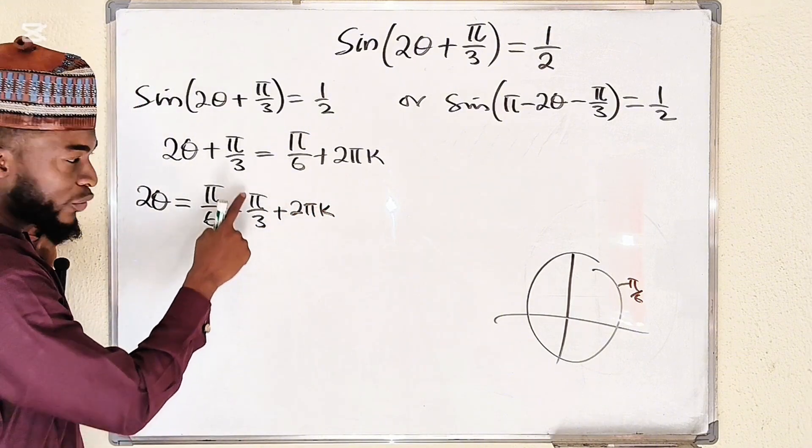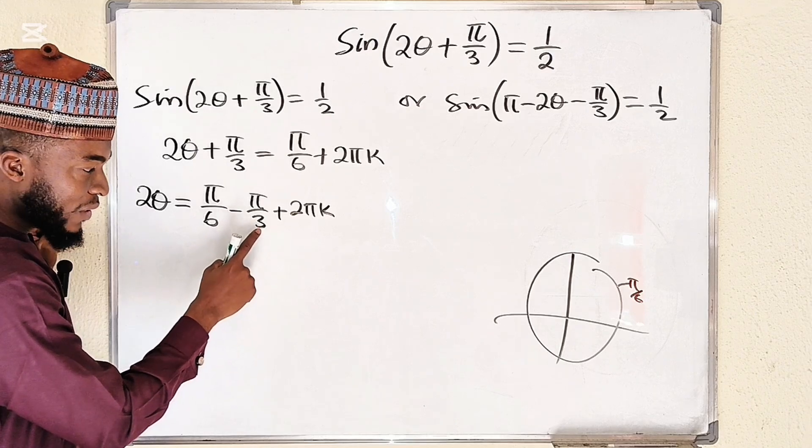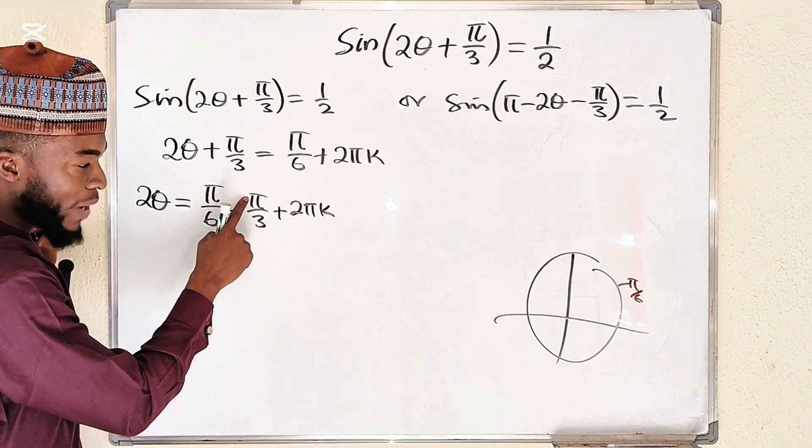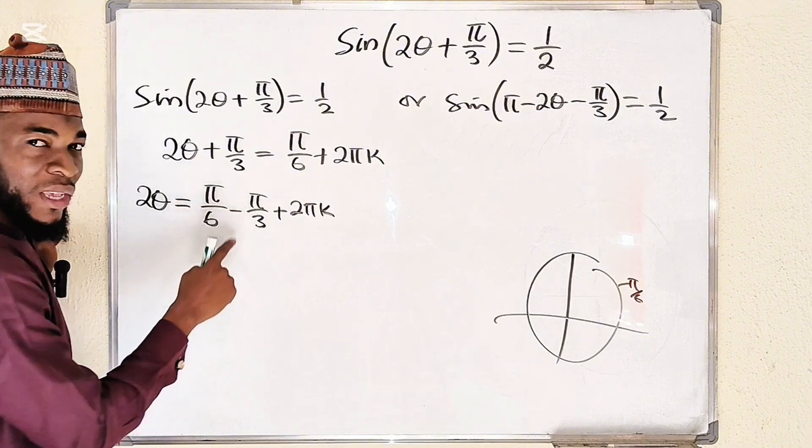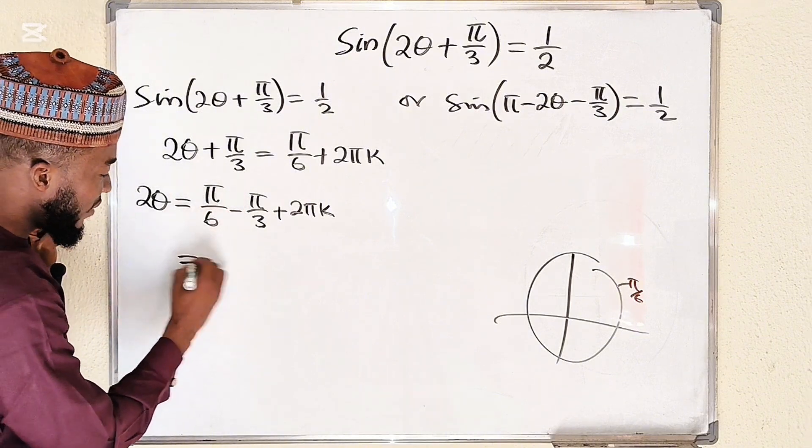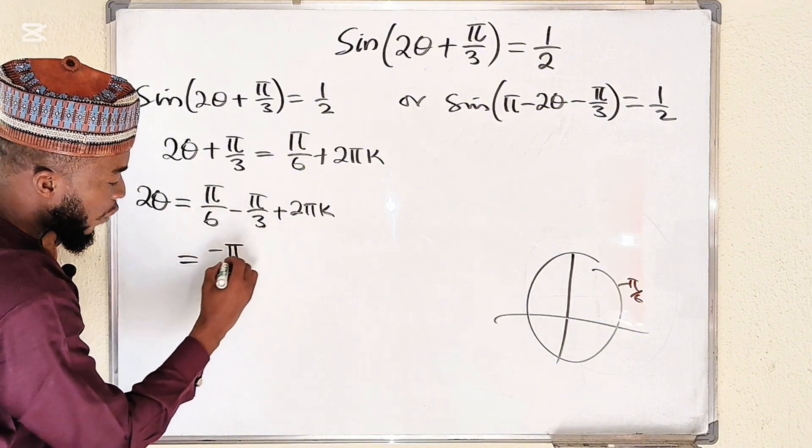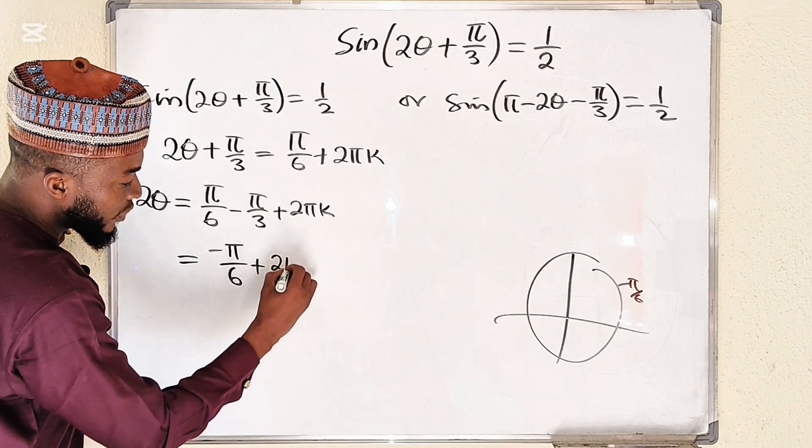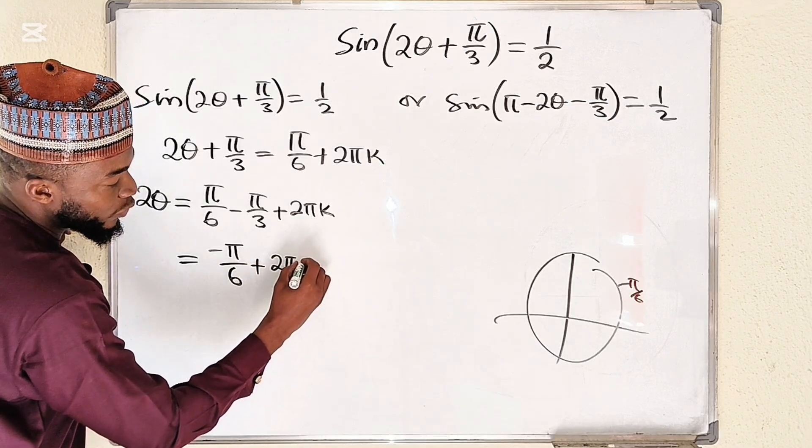You can multiply the top and the bottom by 2 just to make this number equal to 6. So if it is 6 here we have 2 pi here. 1 pi minus 2 pi is negative pi, so this is negative pi over 6 plus multiples of 2 pi.